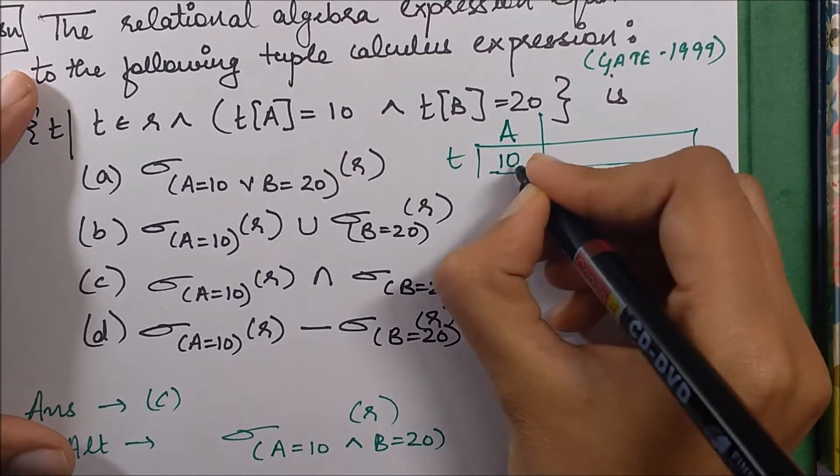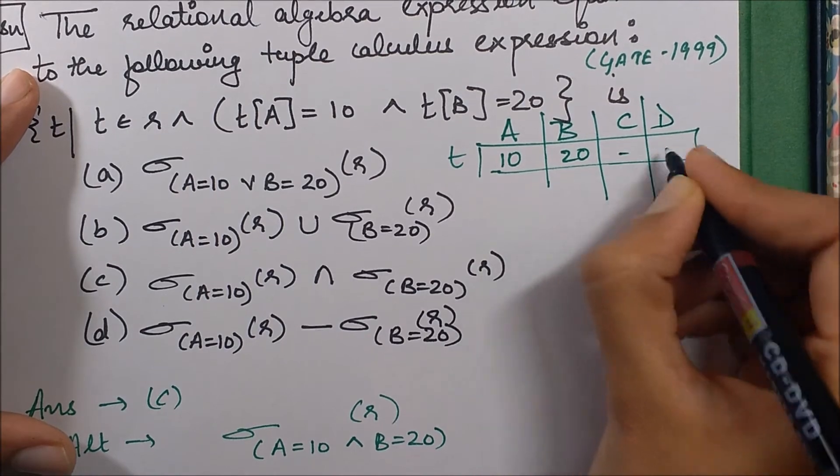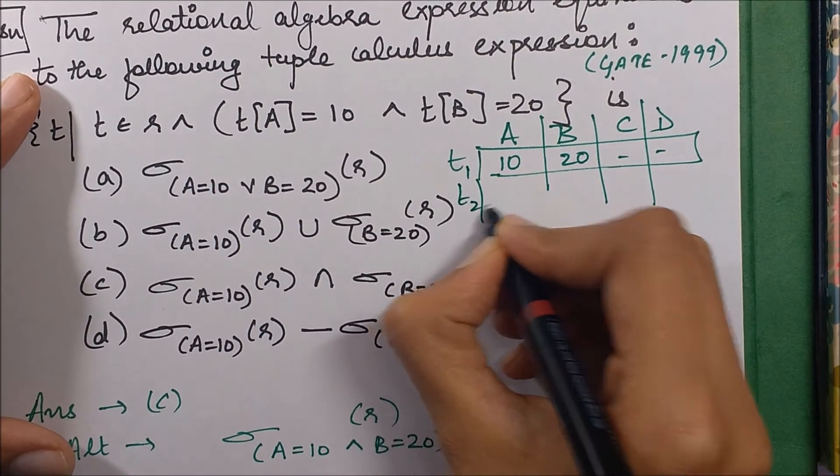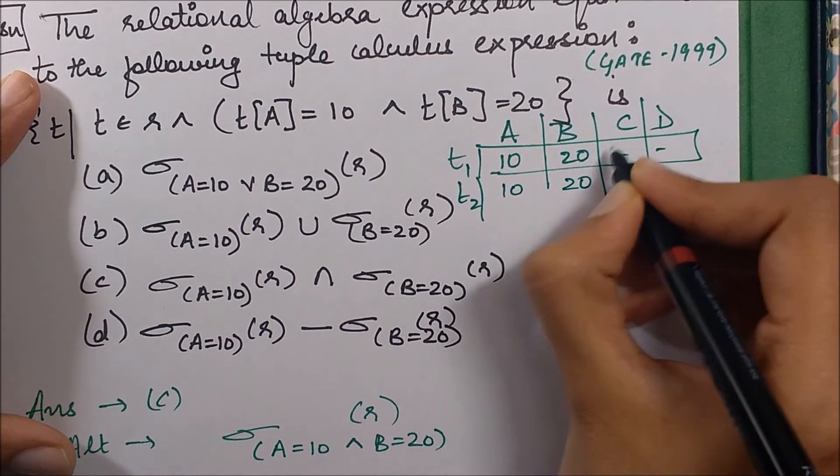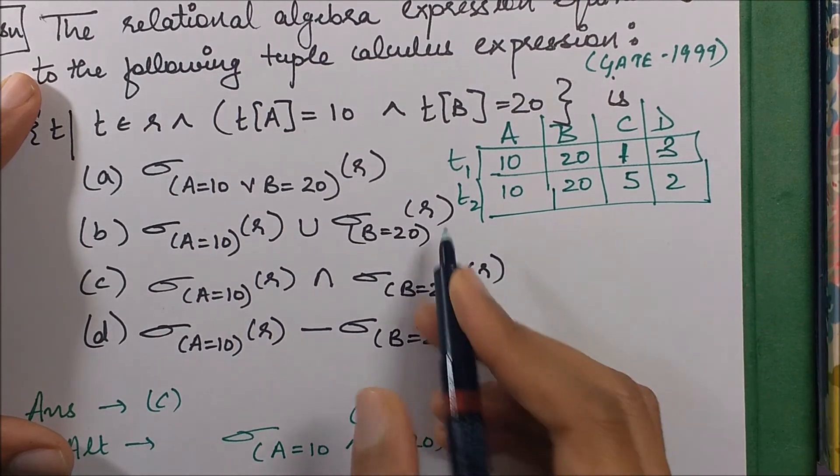c, d can all have any other value. So I need all those tuples - this has value 1, 3, this is 5, 2, and so on. I need all those tuples wherein a's value is 10 and b's value is 20.